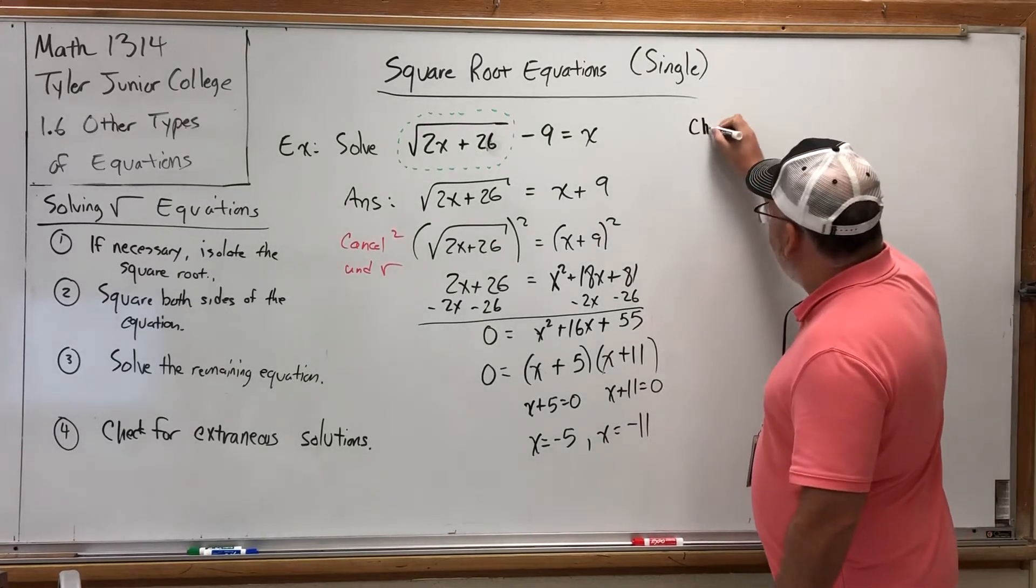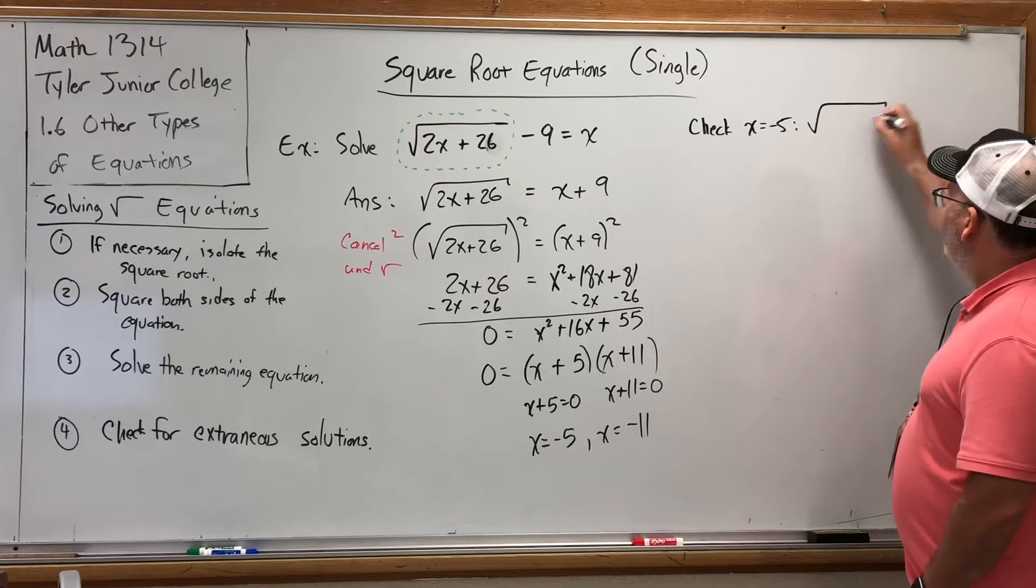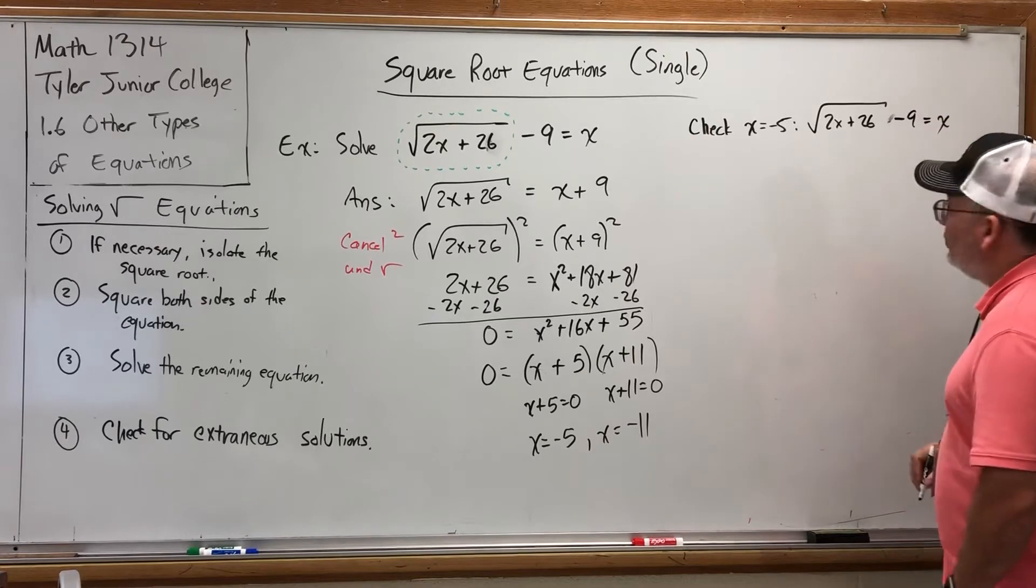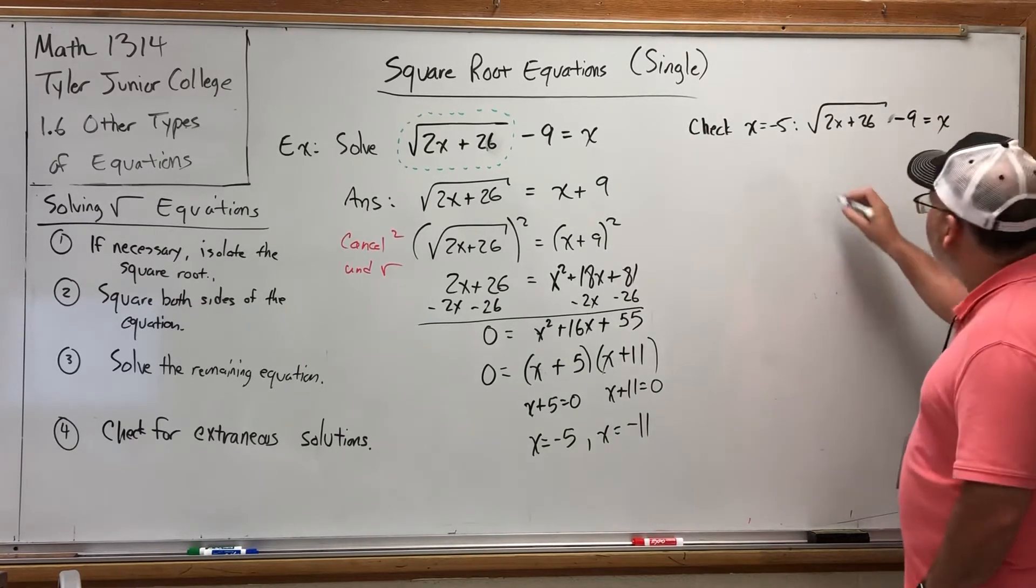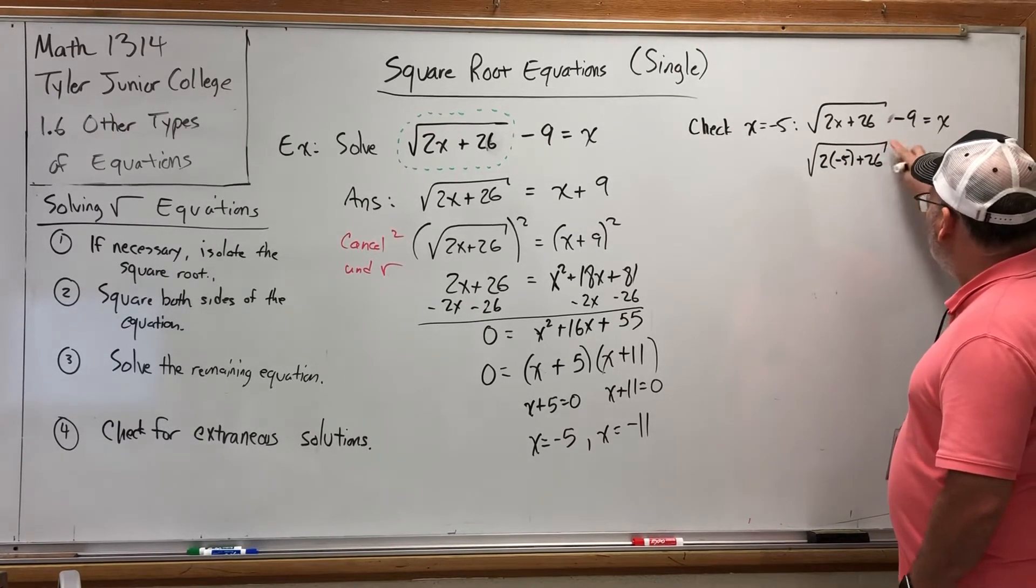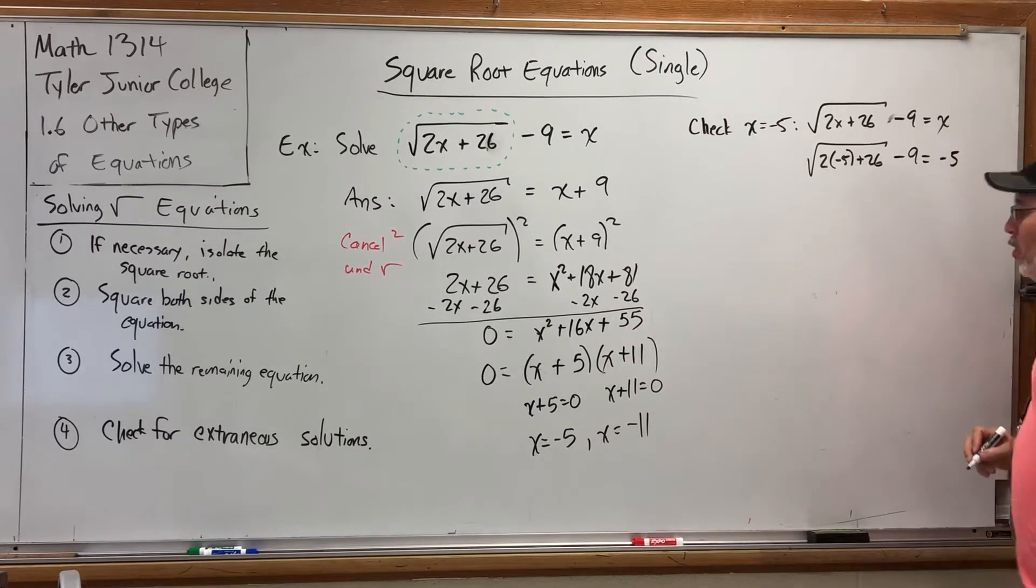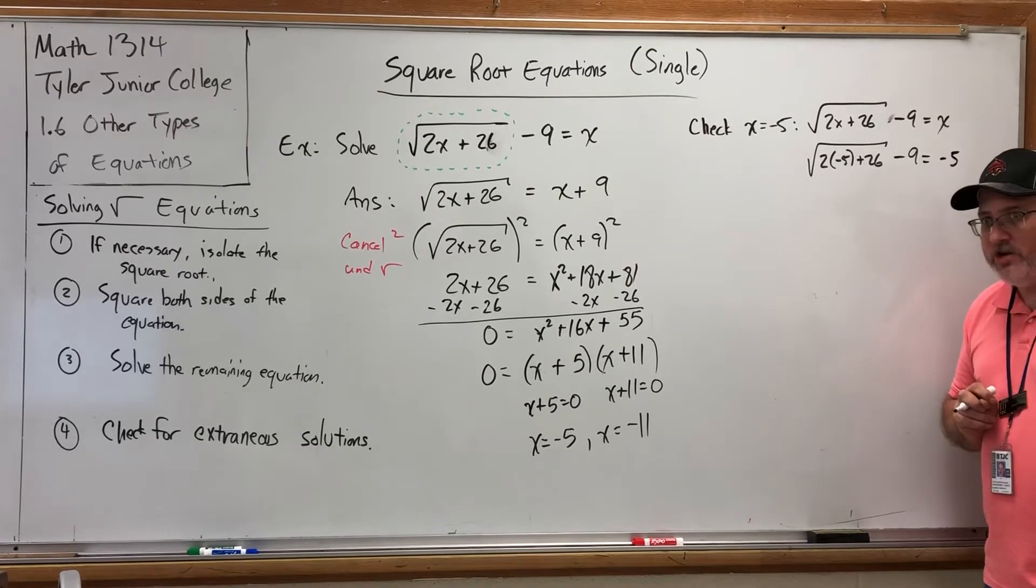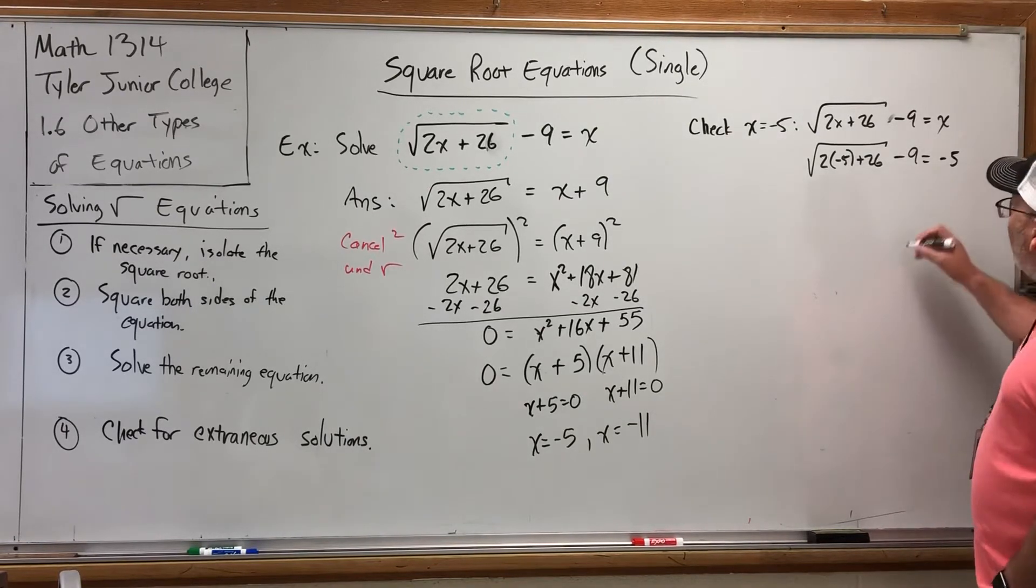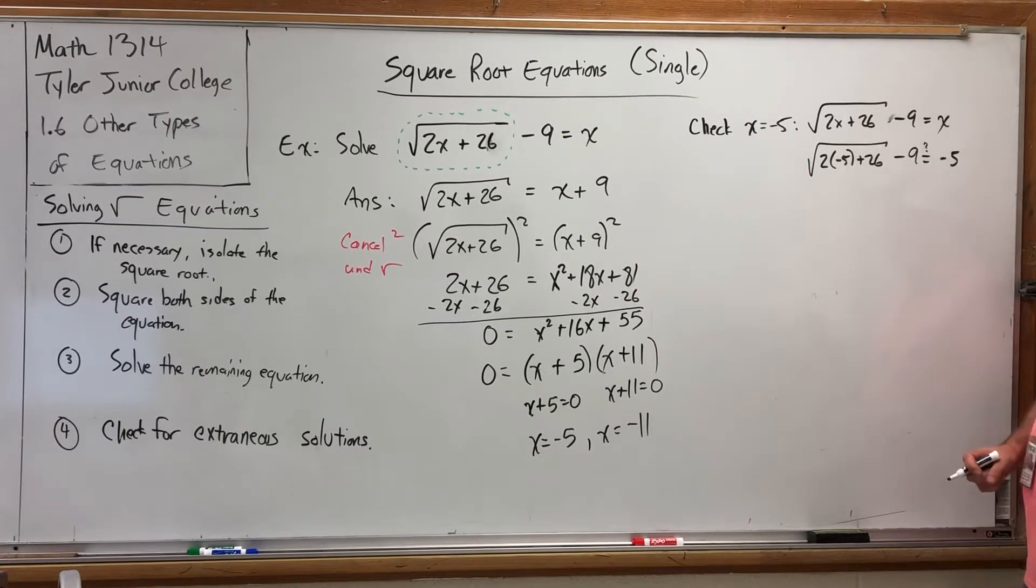So let's check x equals negative 5. To do that, go back to the original equation, which was the square root of 2x plus 26 minus 9 is equal to x, and replace each x with a negative 5. So we get the square root of 2 times negative 5 plus 26, and then minus 9 equal to negative 5. Now, at this point, this is no longer a statement but a question. I'm not saying these are equal. I am asking, are these equal? And the way you can represent that mathematically is by putting a question mark over the equal sign, which means I'm asking, are these equal?